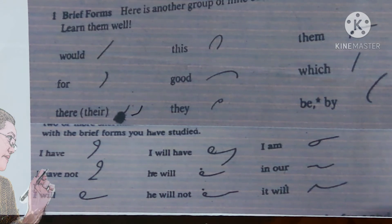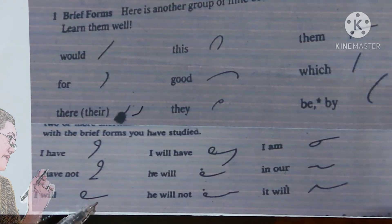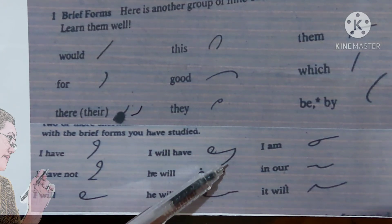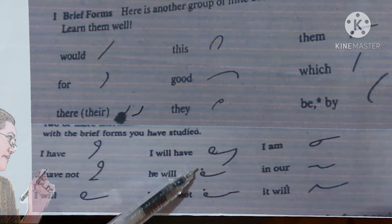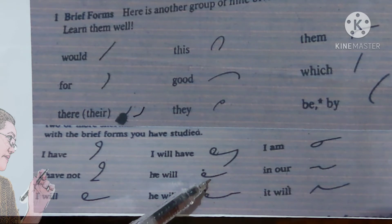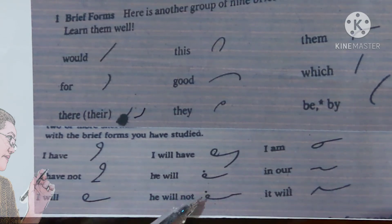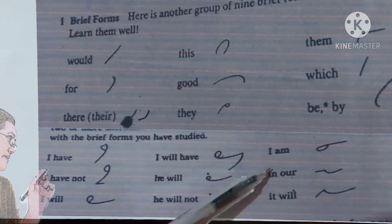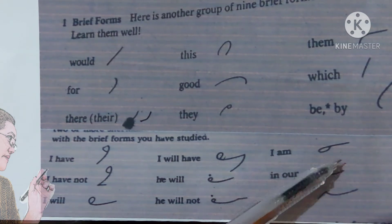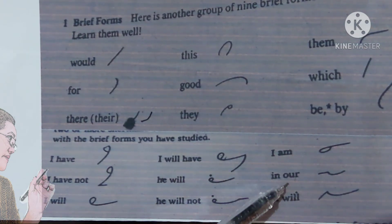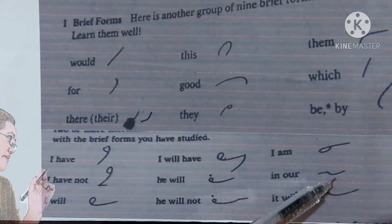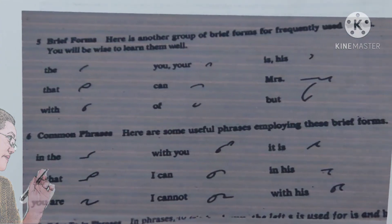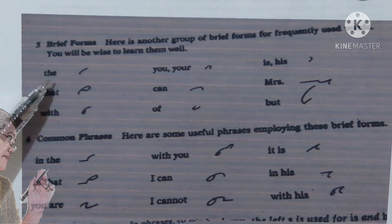'I will' is I-L. 'I will have' is I-L-V. 'He will' is H-E-L. 'He will not' is H-E-L-N. 'I am' is I. In our — in our. It will: T-L.